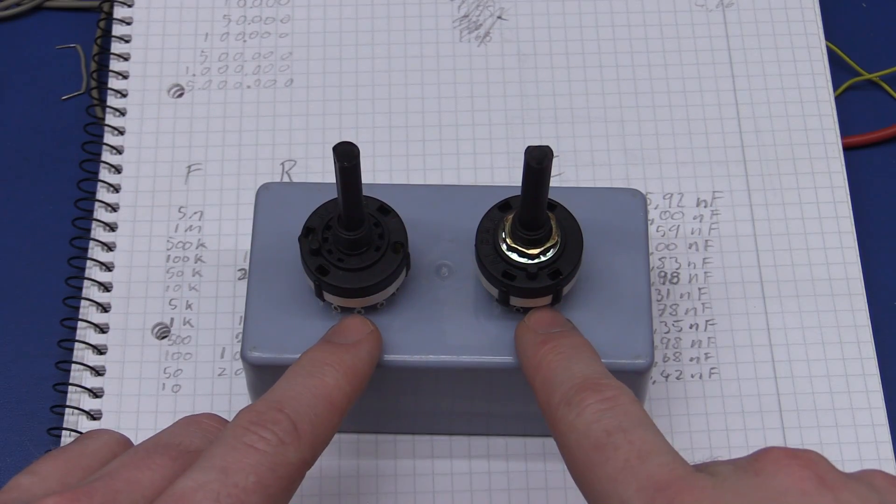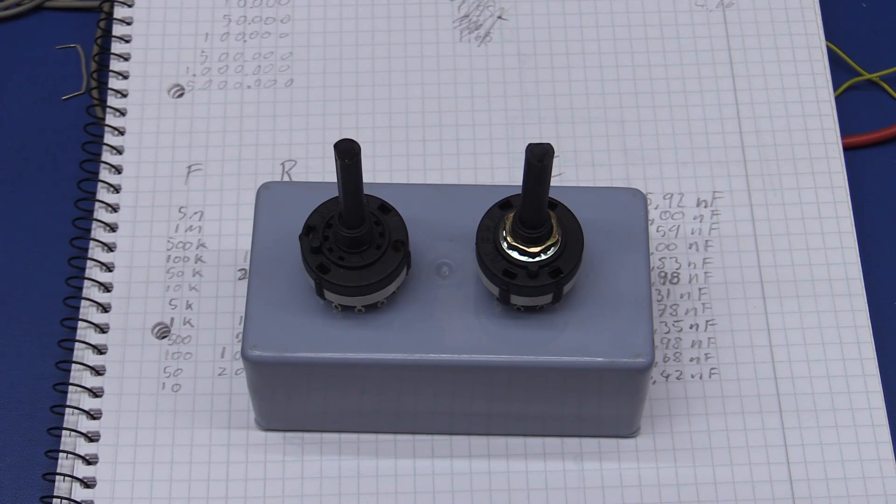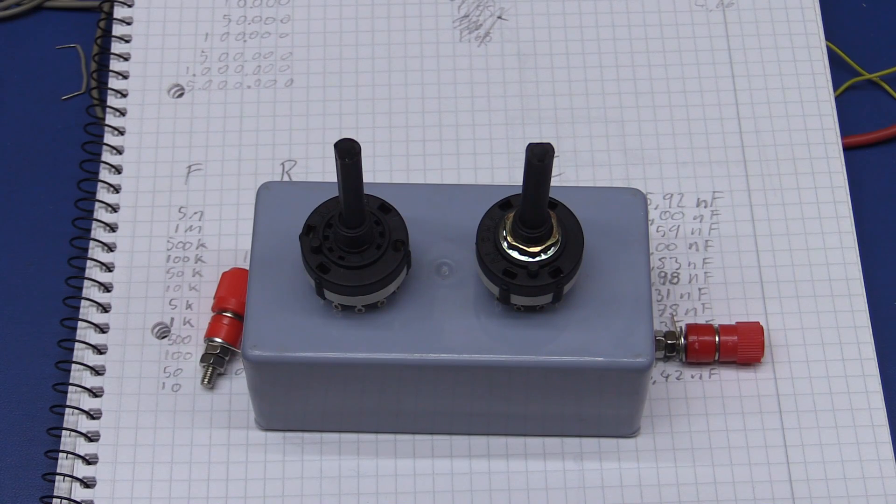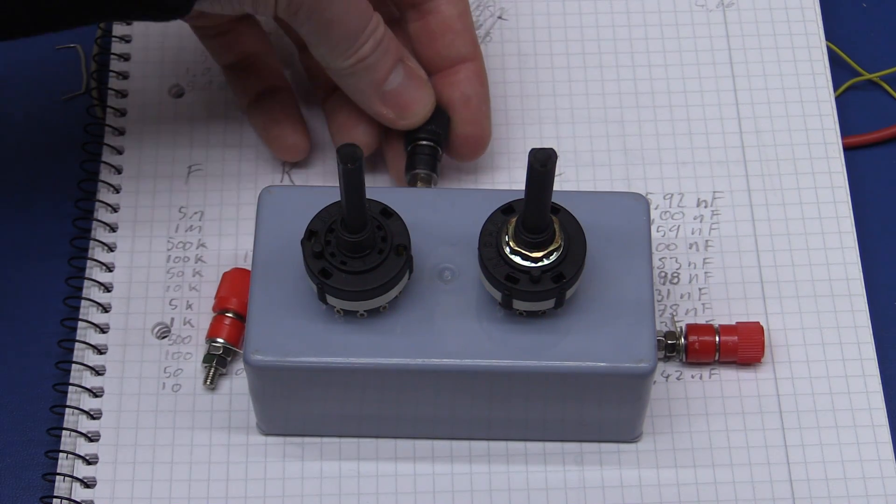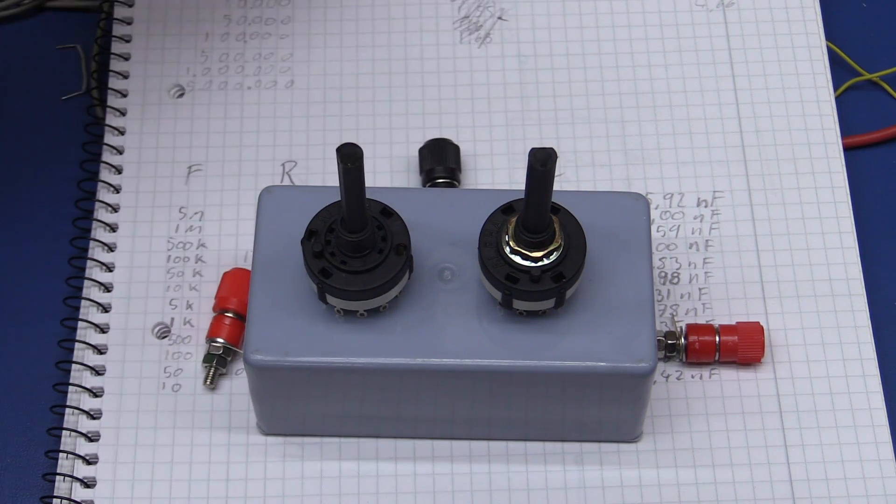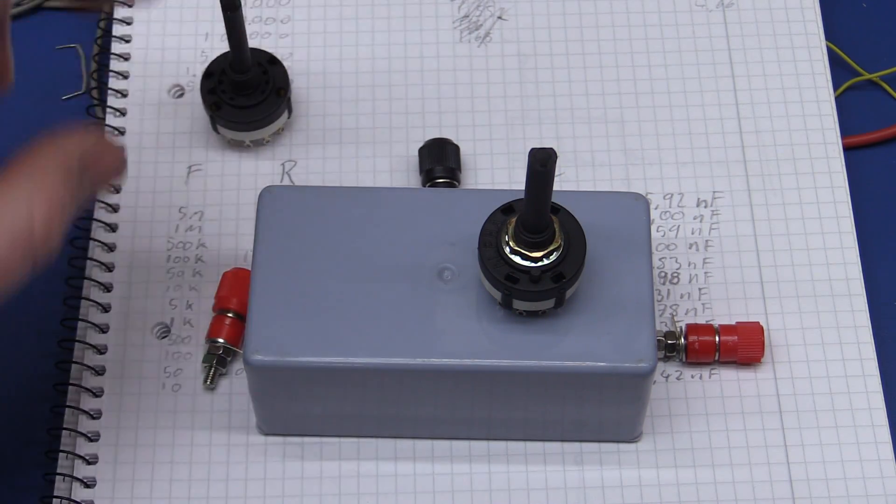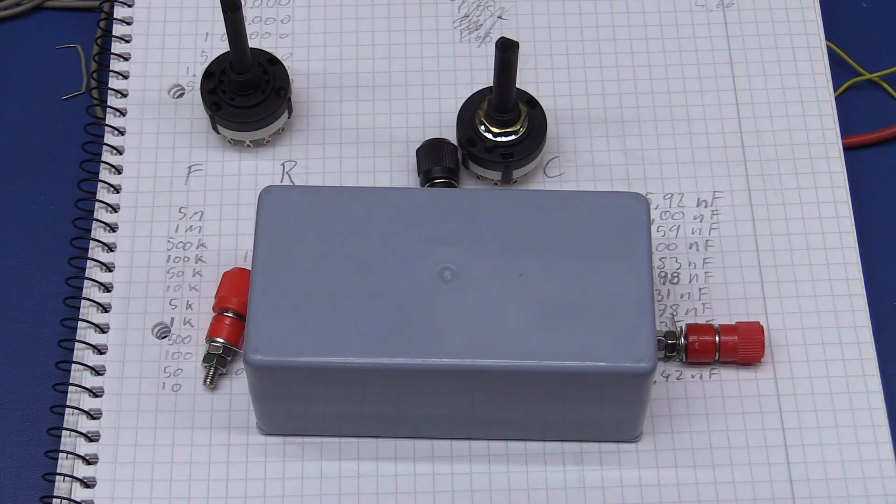I think I want to put the switches here. I want to have the input in the end here, the output in this end here, and then perhaps the ground can come in from the side. What I need to do now is just to drill the holes. I won't show that, I'll just do it and then come back.